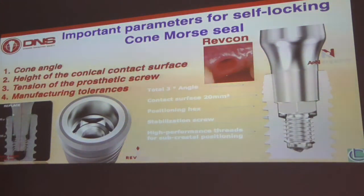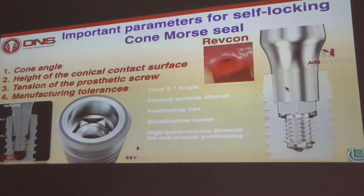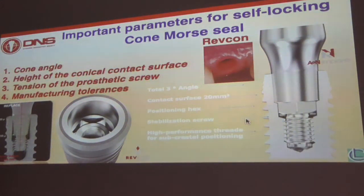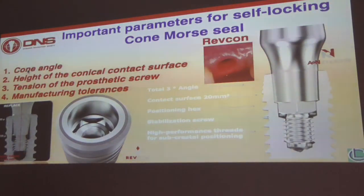Just two minutes on what I'm doing every day. I'm using implants with a conometric connection — a total angle of abutment connection of three degrees, which is 1.5 degrees on each side of the implant. I have a contact surface of 20 millimeters of sealing between the abutment and the implant, and I have the stabilization screw. The four key factors are: the cone angle, the edge of the conical contact surface, the tension of the prosthetic screw, and the manufacturing tolerances.